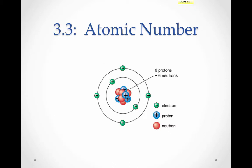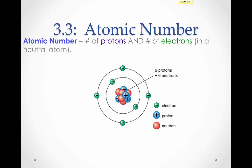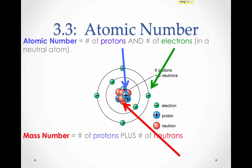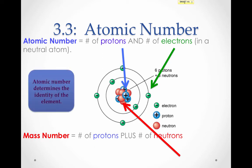Let's take a look at what these numbers mean on the atomic scale. The atomic number is equal to the number of protons and also equal to the number of electrons in a neutral atom. In this atom here, it looks as though some of the protons are hiding behind some neutrons, so you can't see all of them. But if this is a neutral atom, there should be both 6 protons and 6 electrons. The mass number is equal to the number of protons plus the number of neutrons, which accounts for most of the mass of the atom, since electrons have negligible mass compared to protons and neutrons. The atomic number always determines the identity of the element.